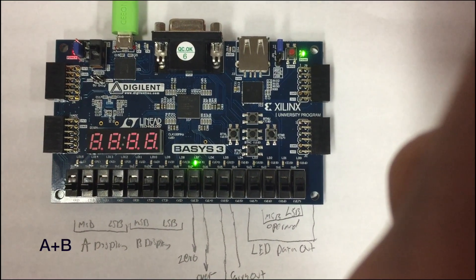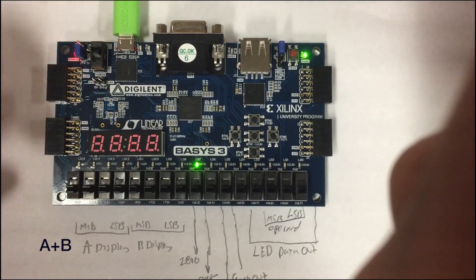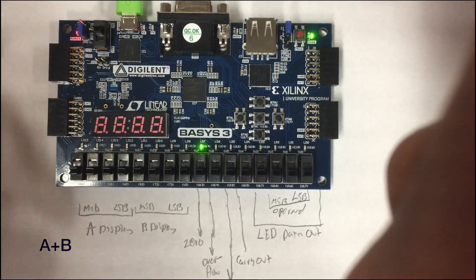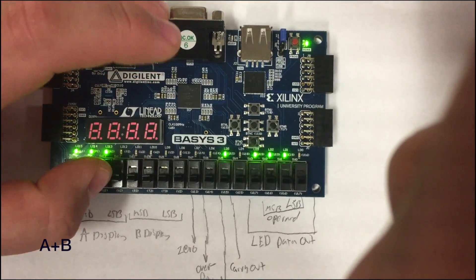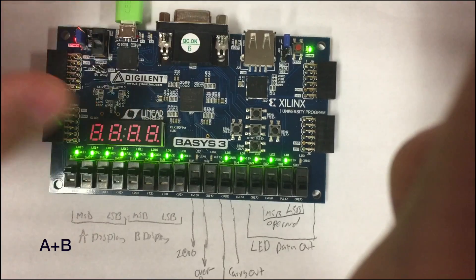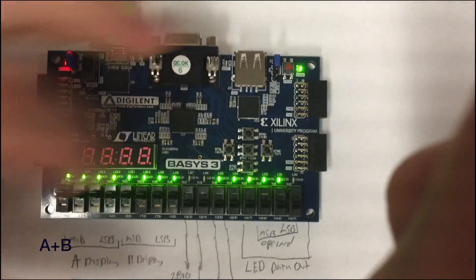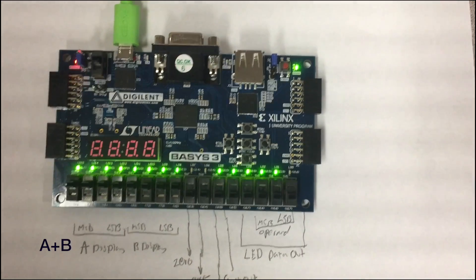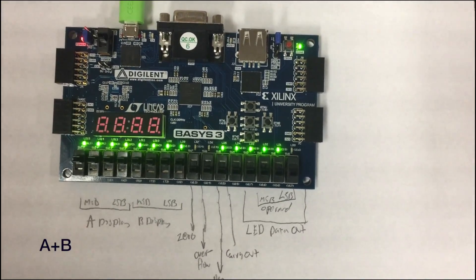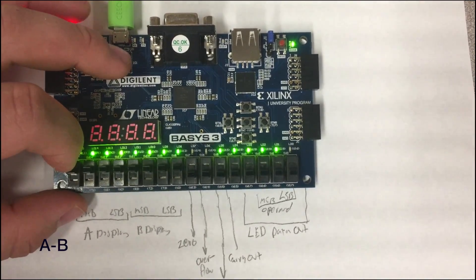To start off with a plus b, everything is at zero so we have our zero flag on. Now we are going to add negative 15 and negative 15, which will output negative 30, shown here as 1 1 1 1 0 with the negative flag up.